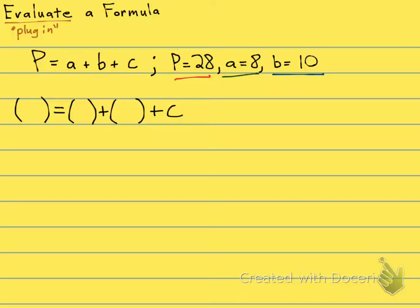So P is 28. A is 8. B is 10. And now I have everything in there except for C, and I'm going to solve for C.